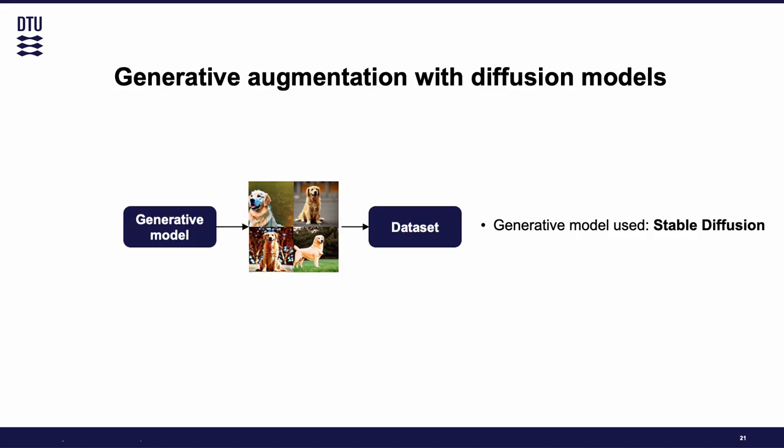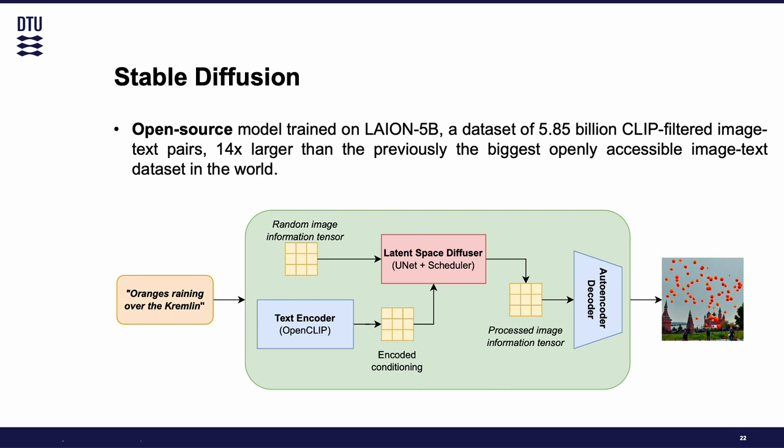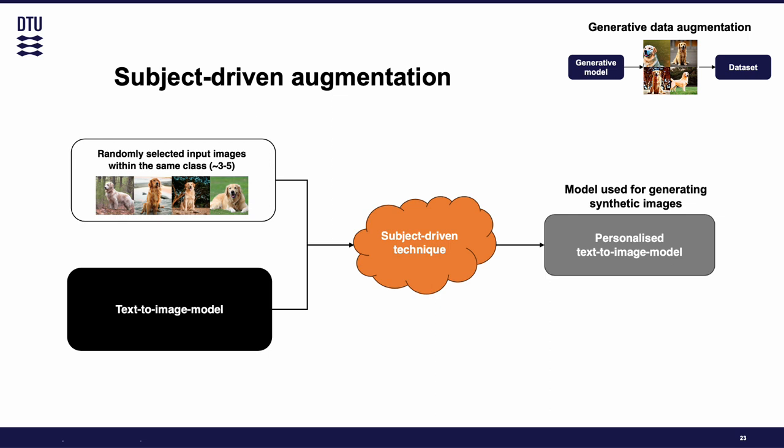Now let's continue with the methods. First, we need to take into account that we are going to use generative augmentation, so we need a generative model to generate some images to augment the dataset. The model that we have decided to use is Stable Diffusion, which is an open source model trained on LAION-5B — one of the largest datasets of text-image pairs openly accessible in the world. Our first method involves subject-driven augmentation: we randomly select input images within the same class we want to augment, and then use subject-driven techniques such as Textual Inversion and Dreambooth to get the personalized text-to-image model.